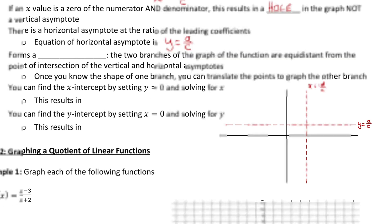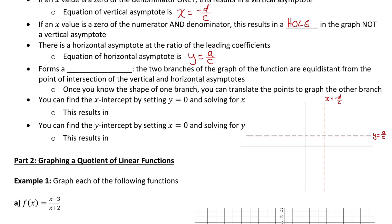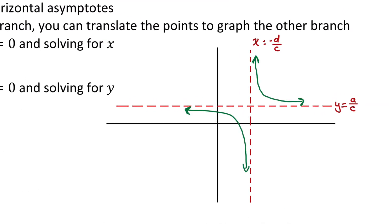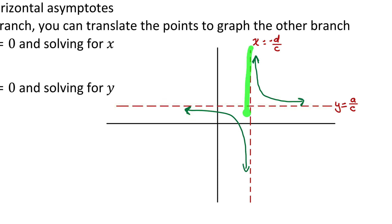Now let's talk about what the graph actually looks like. When we graph a quotient of linear functions, it forms what's called a hyperbola — a graph made up of two branches that are equidistant from the point of intersection of the vertical and horizontal asymptotes. Notice as x goes to both infinity and negative infinity, the function approaches the horizontal asymptote. And as the function approaches the vertical asymptote, it's always going to go to either negative infinity or positive infinity.